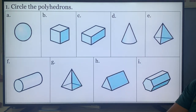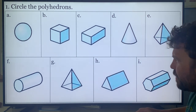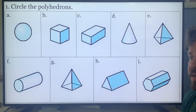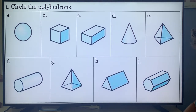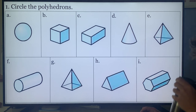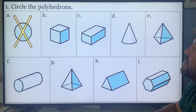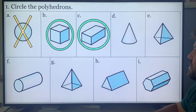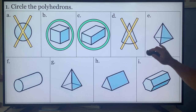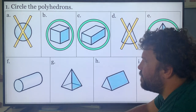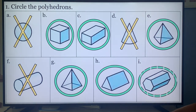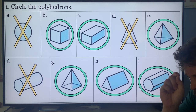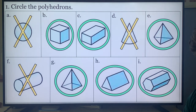I want you to circle the polyhedrons — you have to know what a polyhedron is before you begin. Remember, polygon means all straight sides. A is a sphere — it's curved, so no. B is a cube — all straight sides, good. C is a prism, good. D has a curve — bad. No curves. F has a circle — that's a curve, bad. Straight lines are a polyhedron. Any time you throw one little curve in there, it's not a polyhedron.